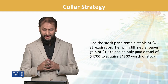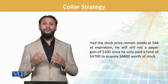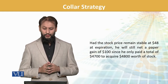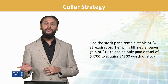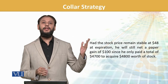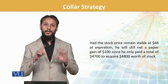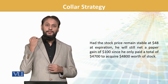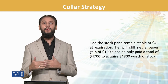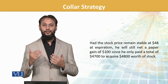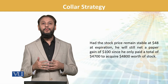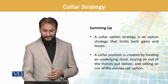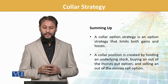This is how the strategy works. Agar stock stable rahe at $48 — stock ki value $4800 hai aur humara package $4700 ka bana tha — still we are $100 in profit. Agar stock ki price mein koi bhi change nahi aa rahi, phir bhi humein $100 ka advantage hai. So you can see the beauty — at the same level bhi yeh humein kuch benefit de raha hai.